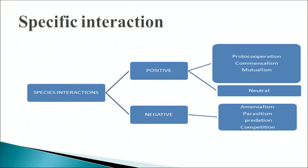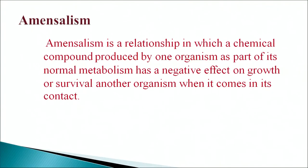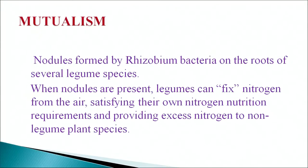You can see in this slide species interactions. Interactions may be positive — proto-cooperation, commensalism, mutualism — or neutral, or negative. Amensalism is a relationship in which a chemical compound produced by one organism as part of its normal metabolism has a negative effect on the growth or survival of another organism when it comes into contact with it. For mutualism, nodules formed by Rhizobium bacteria on the roots of several legume species are a key example: when nodules are present, legumes can fix nitrogen from the air, satisfying their own nitrogen nutrition requirements and providing excess nitrogen to non-legume plant species.